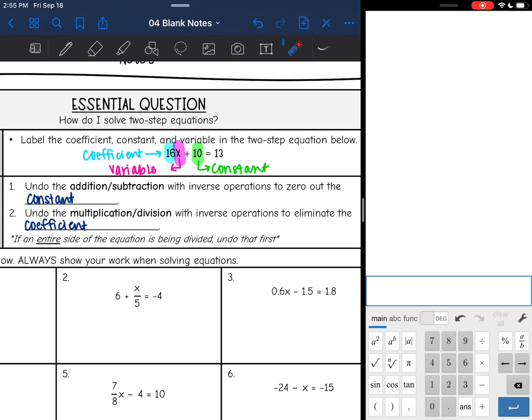So we get rid of the constant first, and then we get rid of the coefficient second. We always follow those steps for a two-step equation unless we have an entire side of an equation that's being divided. Basically, if it's in fraction form, we're going to undo that division first. But mainly, we will follow these two steps.